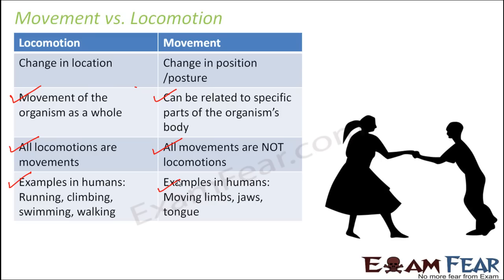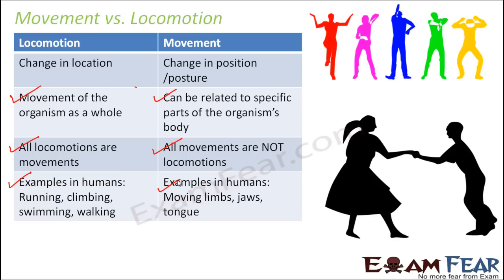Think of two people dancing — when they dance and move from one place to another, that is locomotion. But at the same time their body parts are moving, so that is also an example of movement. If instead they stand at one place and just keep moving their hands, that is an example of movement only.